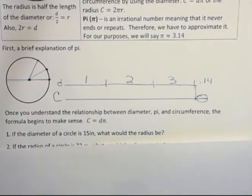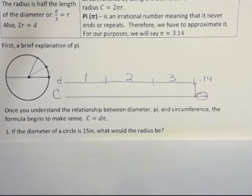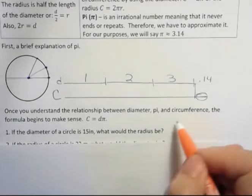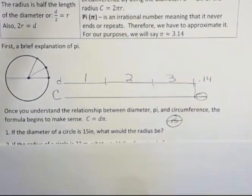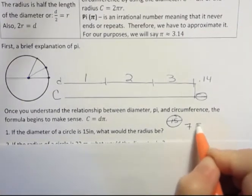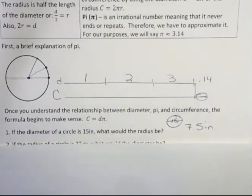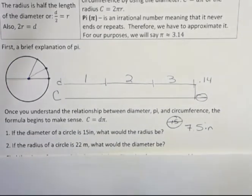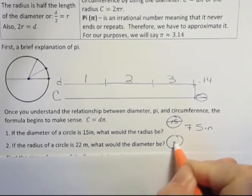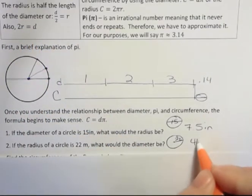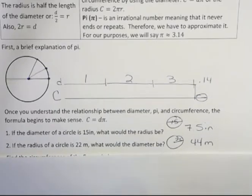So first of all, you have to be able to go back and forth between the radius and the diameter. So if the diameter of a circle is 15, what would the radius be? Well, the diameter, I'll make a little one here. If that's 15, the radius is half of that. So that would be 7.5. I should probably have, oh, I did say inches. Okay, 7.5. And then here, the radius of a circle is 22 meters. What would be the diameter? Well, the diameter is 2 times the radius. So that would be 44 meters for the diameter. This is r and this is d. So that's going back and forth.